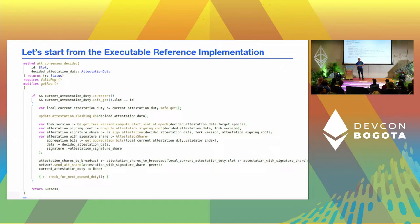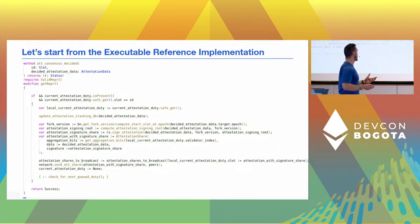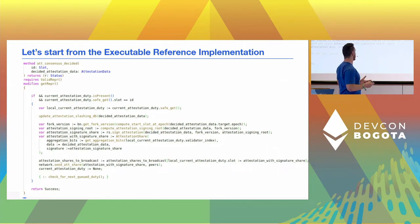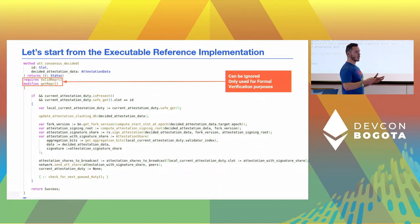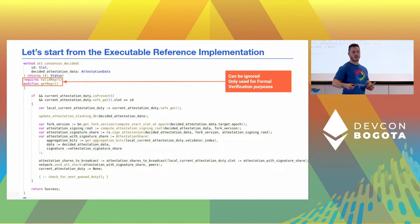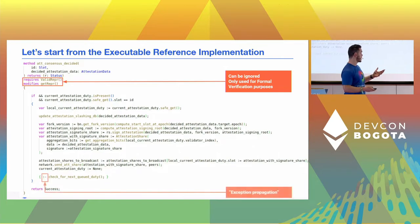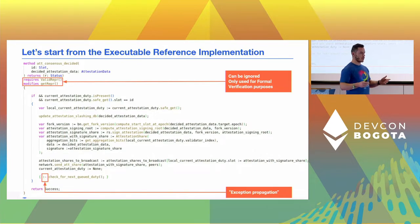Starting from the executable reference implementation — what I want to show here is the method that is called when the consensus protocol decides on a new attestation. The code is pretty easy to understand; I think any developer would be able to read it. It's really a mix of JavaScript and Python. There are some statements at the top required for formal verification — if you're just interested in the reference implementation you can ignore them. There's also some specific syntax at the bottom equivalent to exception propagation in common languages, but aside from this it's quite simple.